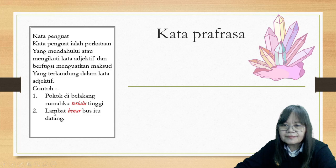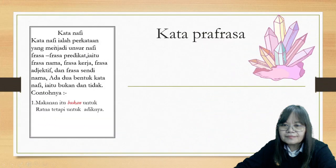Begitu juga contoh nombor dua: 'Lambat benar bas itu datang.' 'Benar' ini sebagai kata penguat untuk menguatkan maksud bahawa bas itu lambat datang. Kalau cikgu kata 'lambat bas itu datang', dia belum ada sifat kuat itu, maksud lambat itu. Kata nafi ada dua iaitu bukan dan tidak. Kata nafi ialah perkataan yang menjadi unsur nafi bagi frasa predikat - iaitu frasa nama, frasa kerja, frasa adjektif, dan frasa sendi nama. Contohnya: 'Makanan itu bukan untuk Rana tetapi untuk adiknya.'